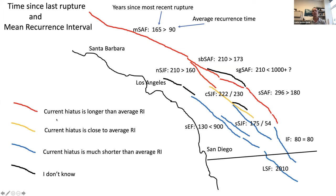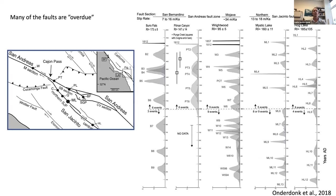Here is the same fault map but with the years since most recent rupture on the left, compared to the average recurrence time from paleoseismology. I've color-coded faults where the current open period is longer than the average recurrence in red, yellow where it's pretty close, blue where the current period is much shorter than the average, and black where I don't know. Much of the Southern San Andreas and San Jacinto have current open periods longer than the average recurrence interval, whereas many faults to the south may not be as stressed. So from a simplistic viewpoint, a lot of these faults are 'overdue' for an earthquake — an idea kicked around for decades.